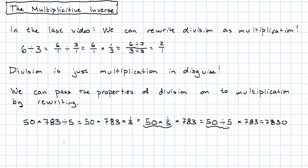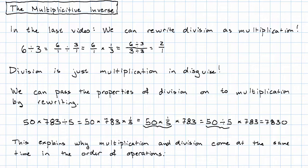Another thing that this shows us is this explains why multiplication and division have to come at the same time in the order of operations. Because they really are the same operation. Just division is written in a weird way.